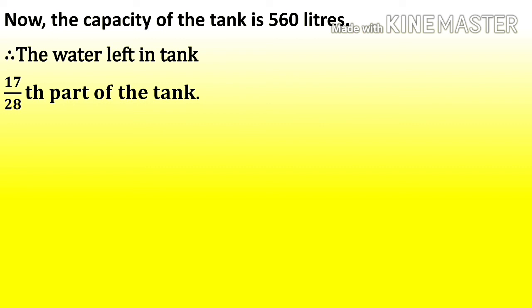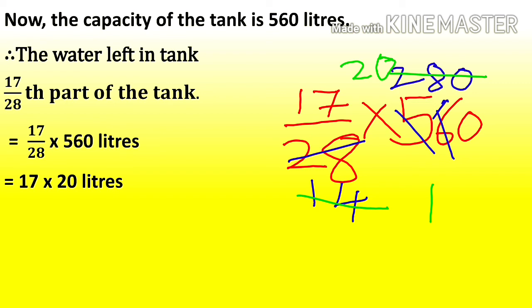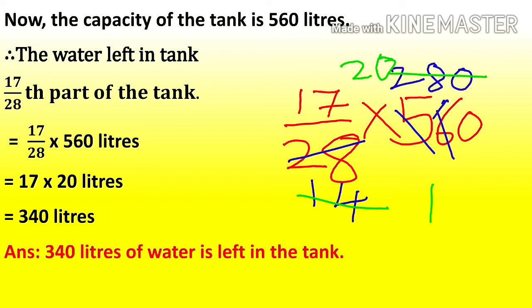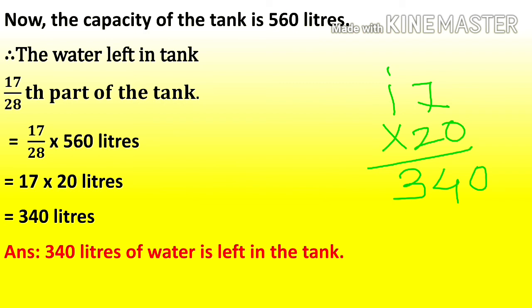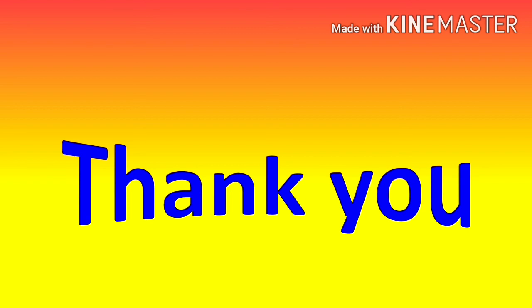The remaining part is 17/28 of the tank. Tank capacity is 560 litres. So water left = 17/28 × 560. Simplifying: 560 ÷ 28 = 20, so 17 × 20 = 340 litres. Water left in the tank is 340 litres. Today we have completed Practice Set Number 10. Thank you for watching this video.